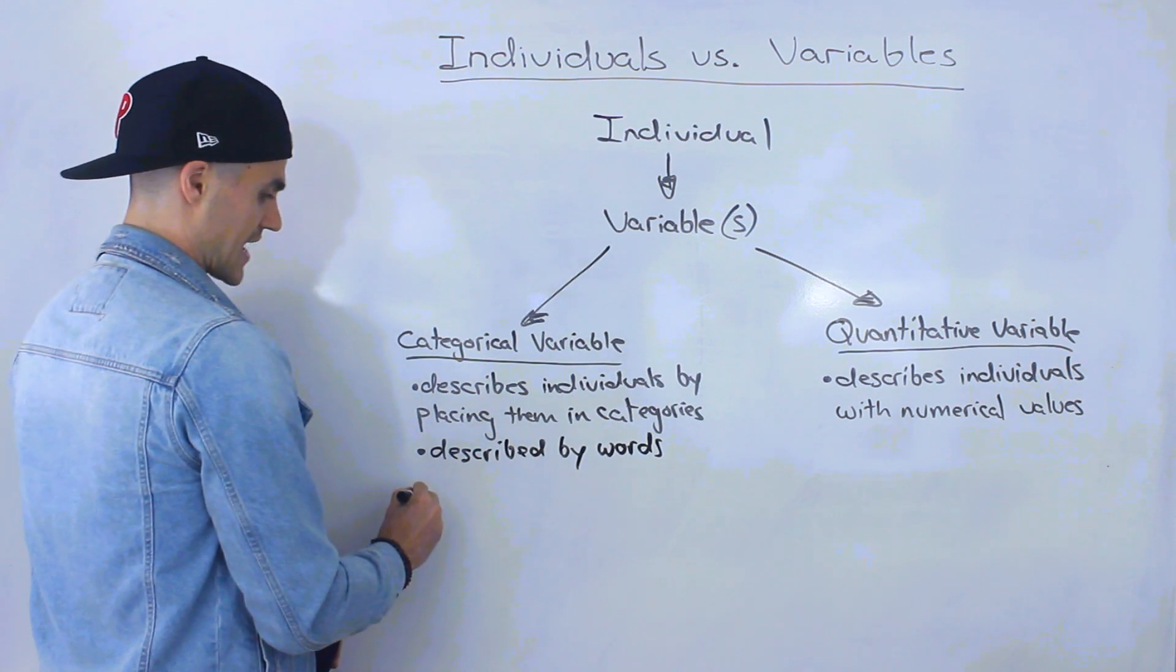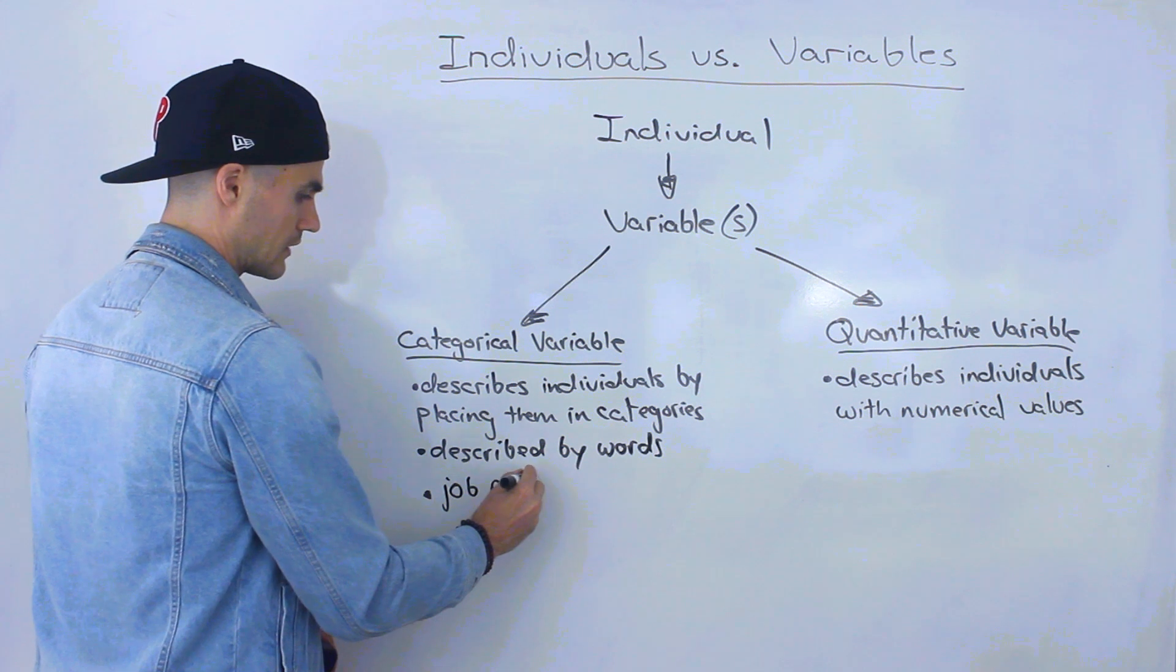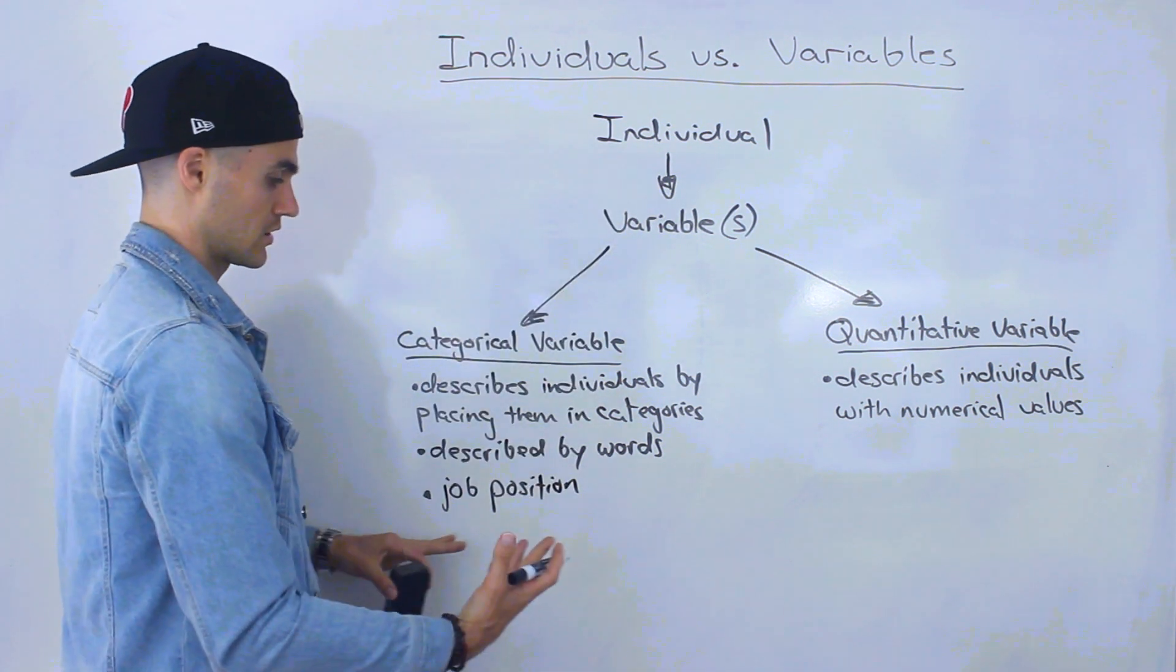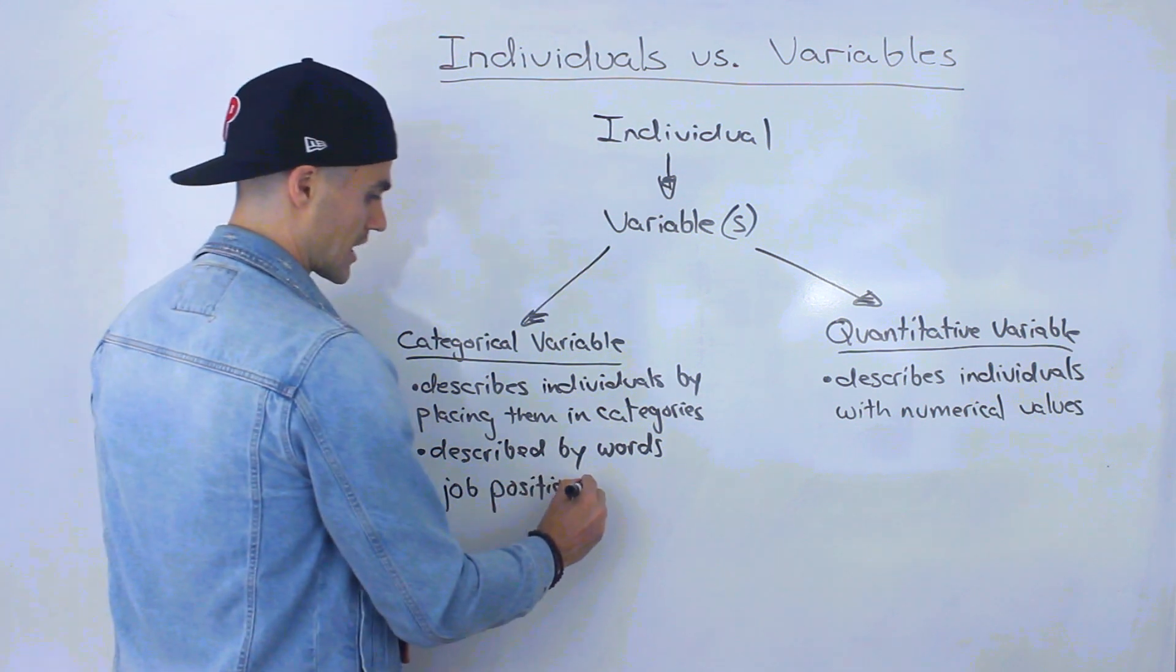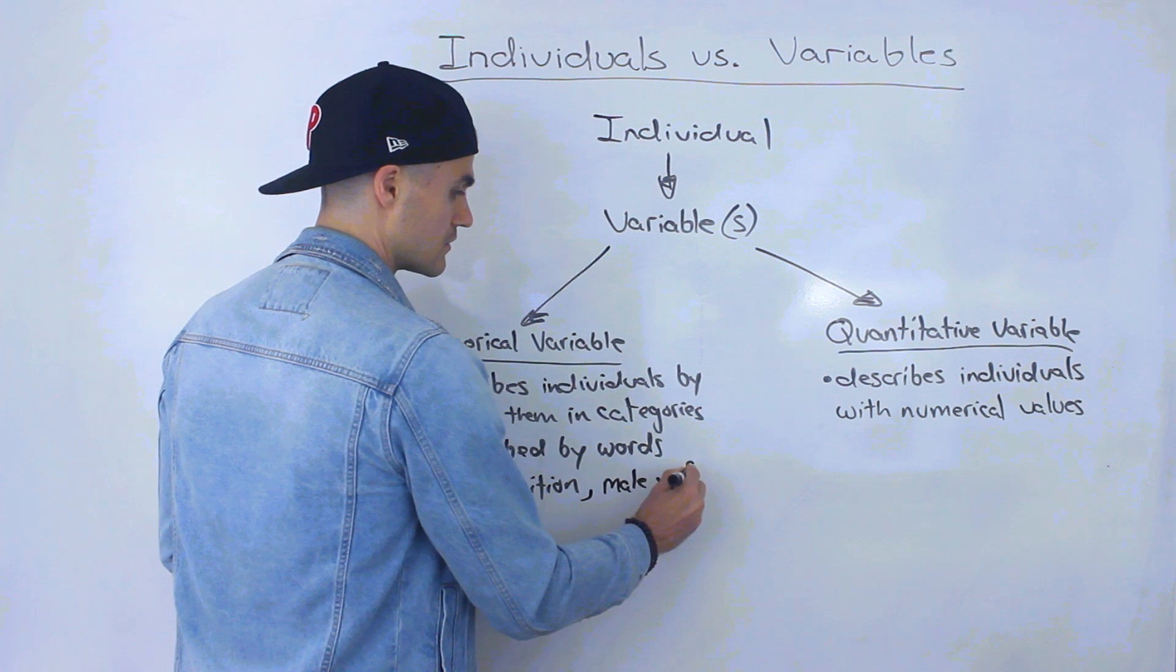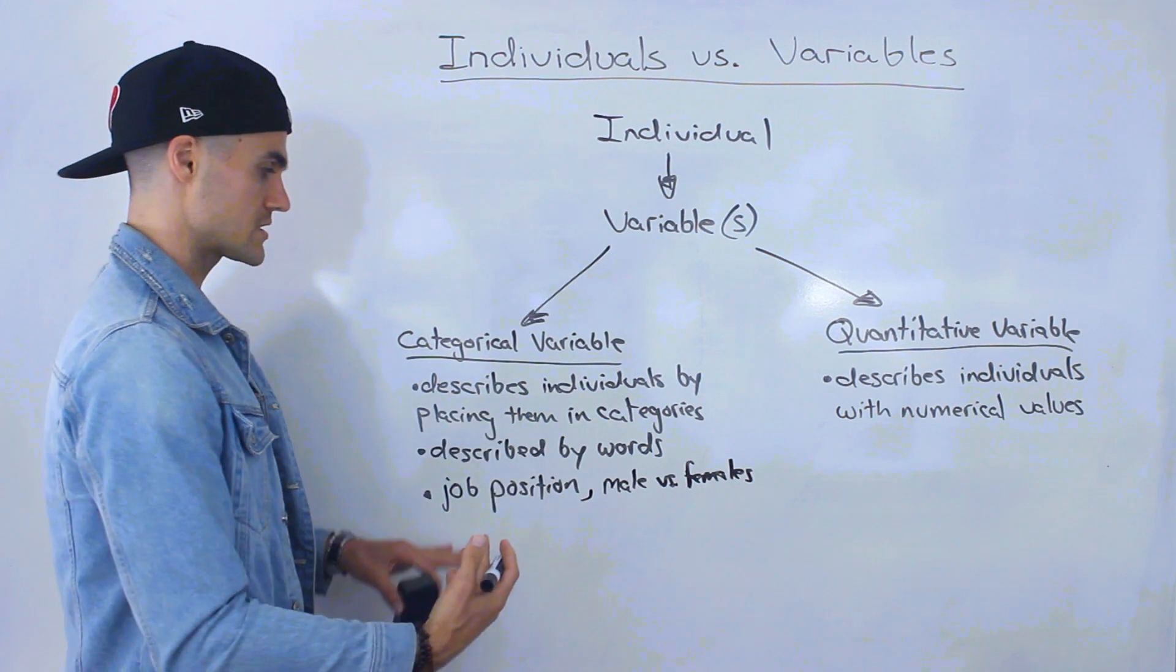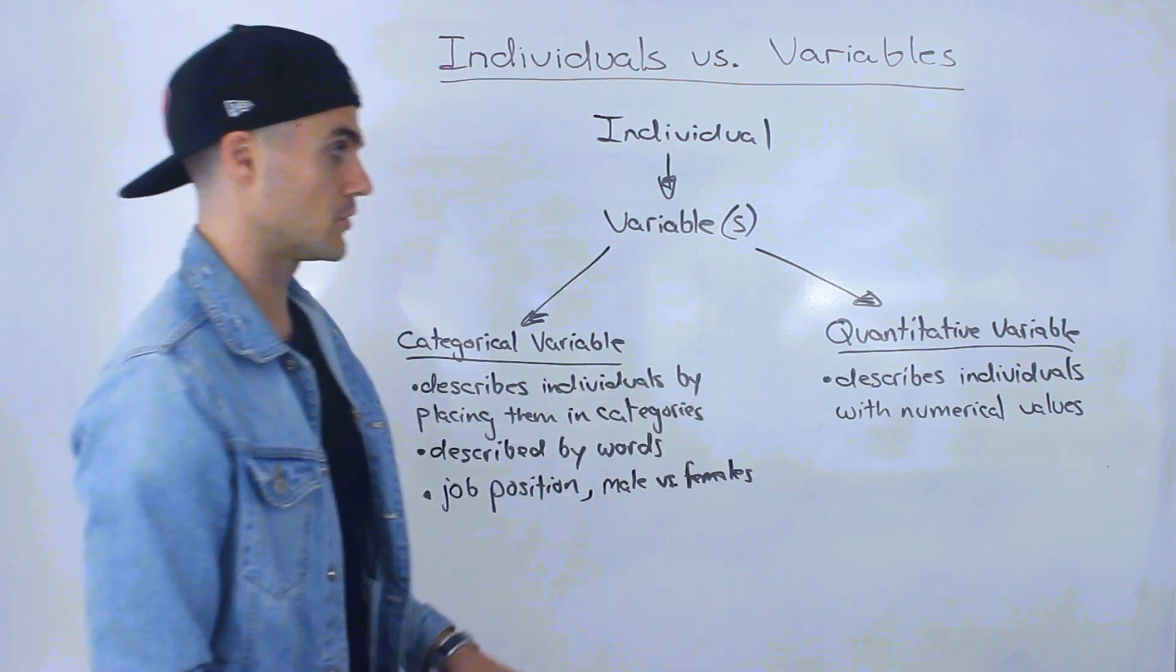So for example, in our previous example that we were looking at, a job position. That would be placing each individual, each employee in a certain category, in a certain job position. Other examples are maybe differentiating between male versus females. Placing these individuals in categories usually described by words.